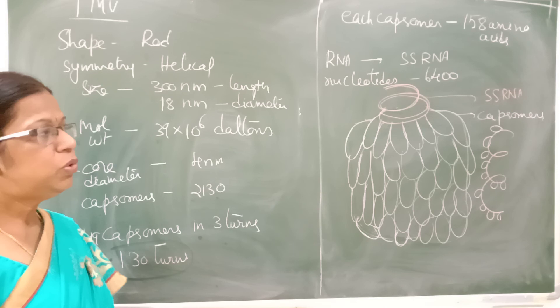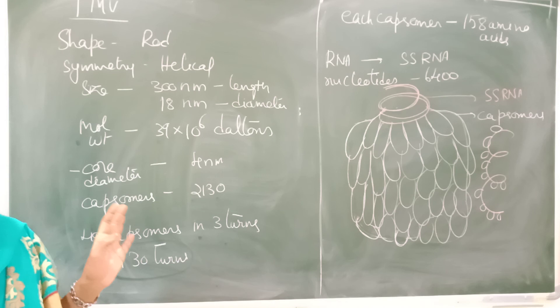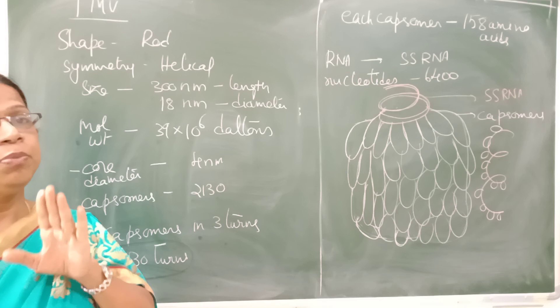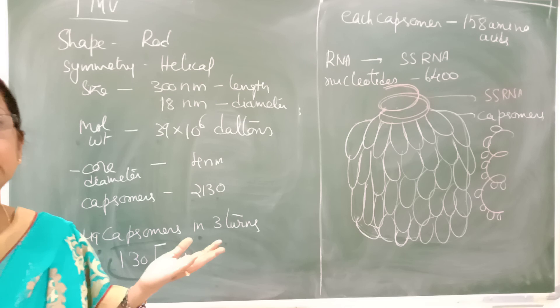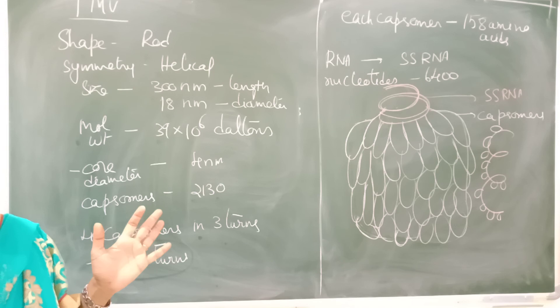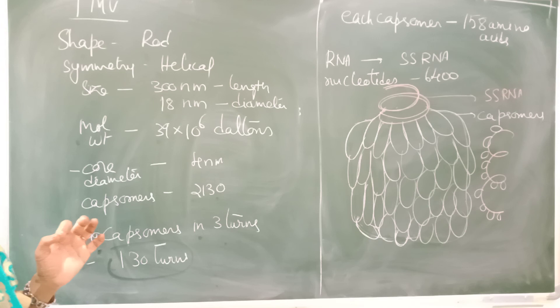The most common symptom caused by tobacco mosaic virus is the mosaic symptom, where there is loss of chlorophyll at certain points in the form of patches. It is easily transmitted through phloem sap — insects that suck the phloem sap carry the virus from diseased plants to healthy plants, causing great loss of yield to the tobacco plant.